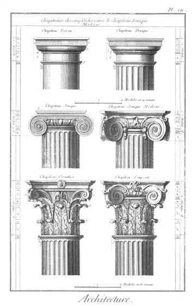Accolade: a sculptural embellishment of an arch. Aisle: subsidiary space alongside the body of a building, separated from it by columns, piers, or posts.